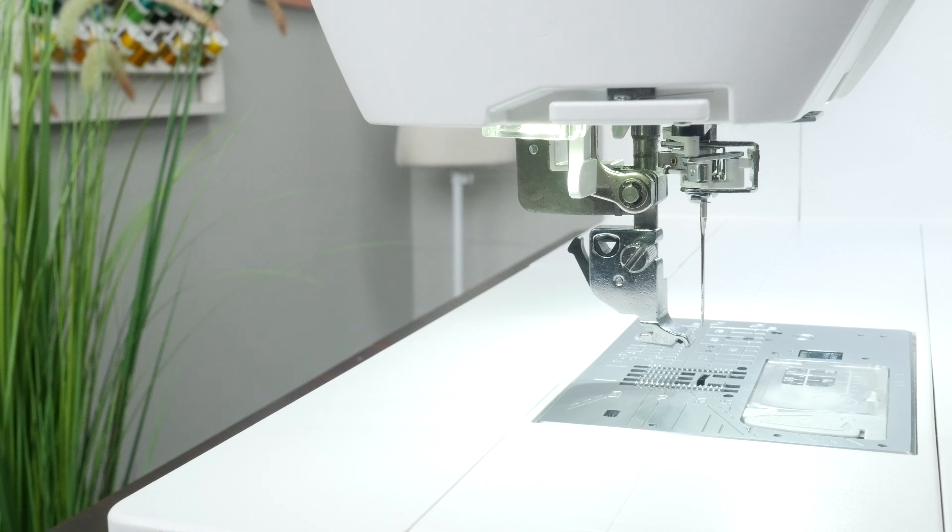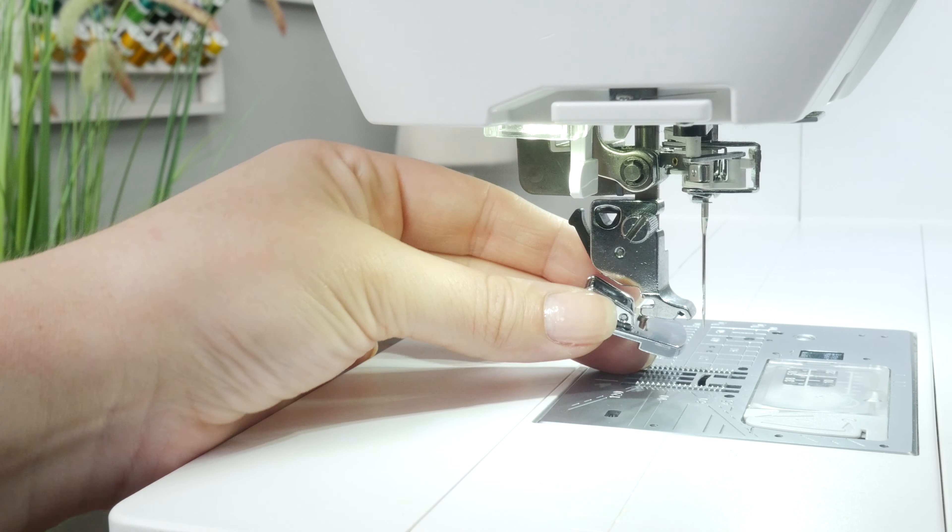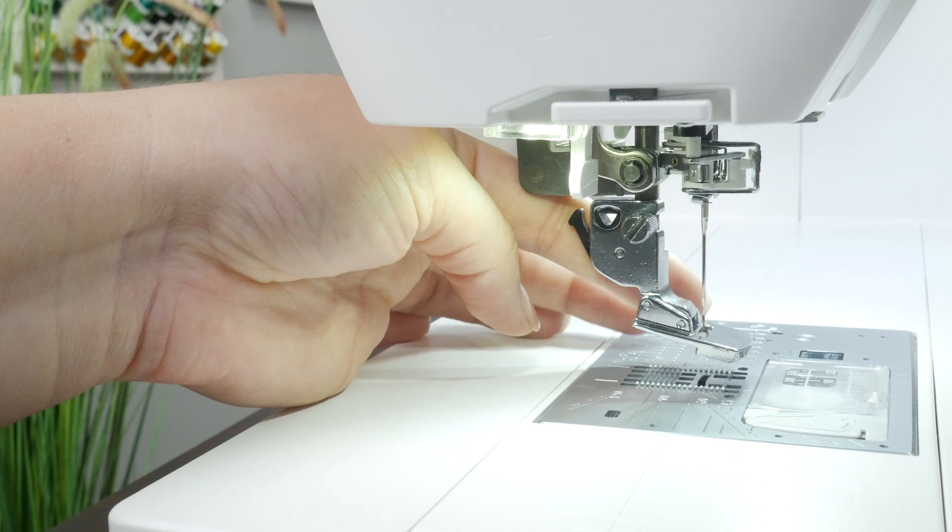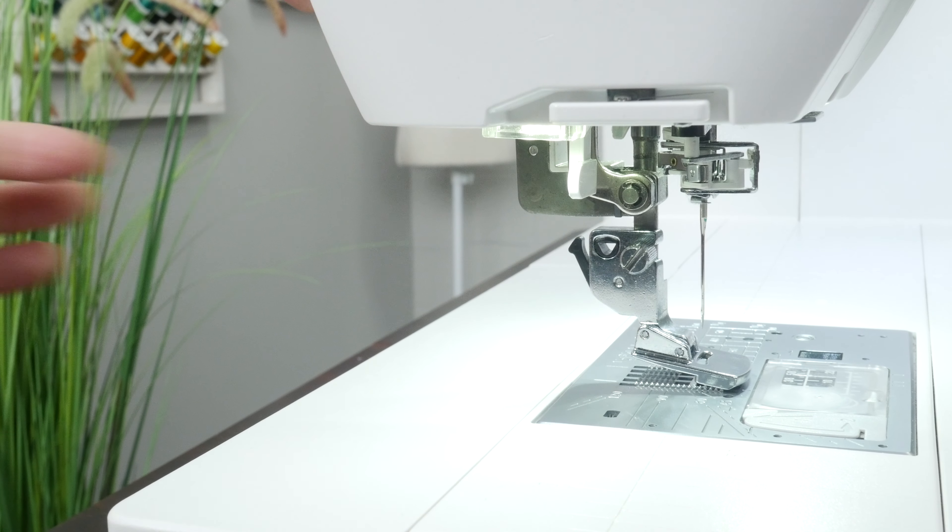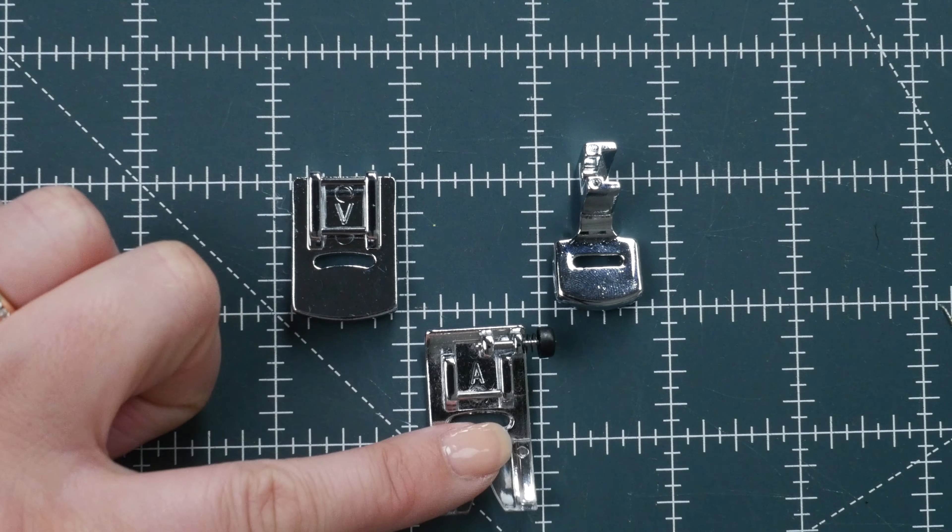To attach it, go ahead and push up the presser foot lifter and hold it to the highest position. Hang the rear pin of the foot on the spur of the presser foot holder. Slowly lower the presser foot lifter until the foot snaps in. Keep in mind this applies to this particular snap-on. Some of them are just as easy as popping on your zigzag foot.